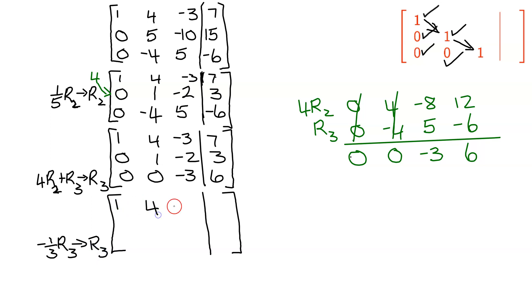Row 1 stays the same. Row 2 stays the same. And row 3, I'm going to be dividing by negative 3. 0 divided by negative 3 is 0. 0 divided by negative 3 is 0. Negative 3 divided by negative 3 is positive 1. And 6 divided by negative 3 is negative 2. So now I'm finally in row echelon form. Now we're ready to do back substitution.